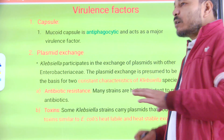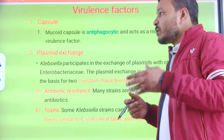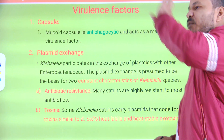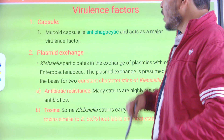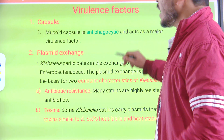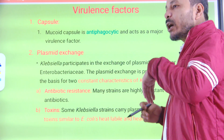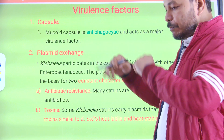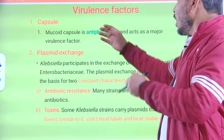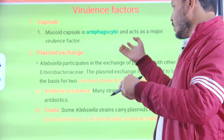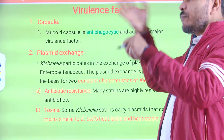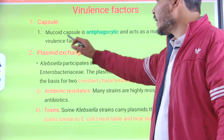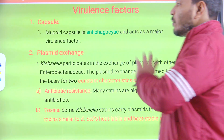Regarding virulence factors — the weapons Klebsiella uses to cause disease — the first is the mucoid capsule, which is antiphagocytic. When Klebsiella enters our body, our defense cells try to engulf it, but because of the polysaccharide covering, phagocytic cells cannot recognize them and treat them as body cells, allowing them to pass through. The mucoid capsule acts as a major virulence factor.